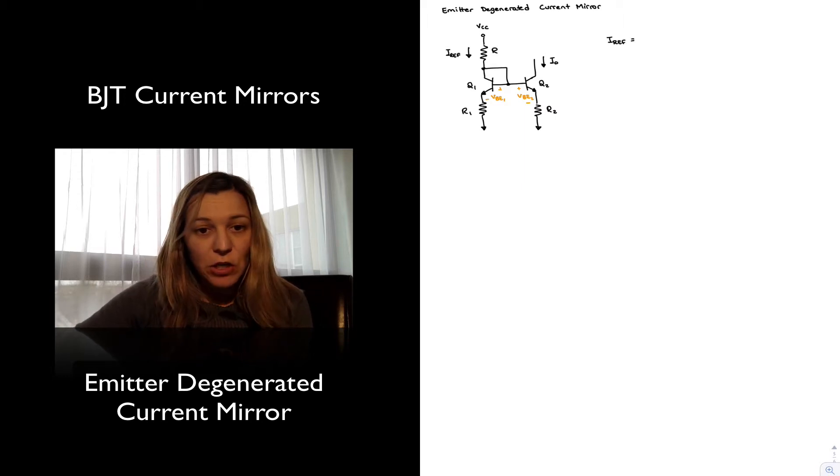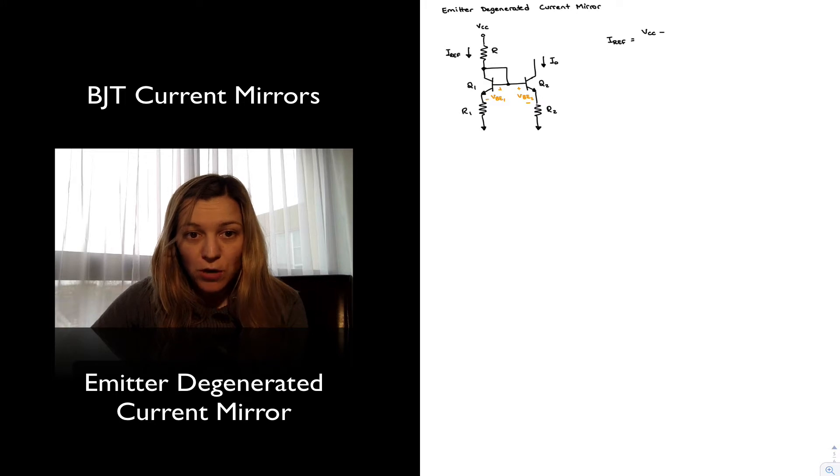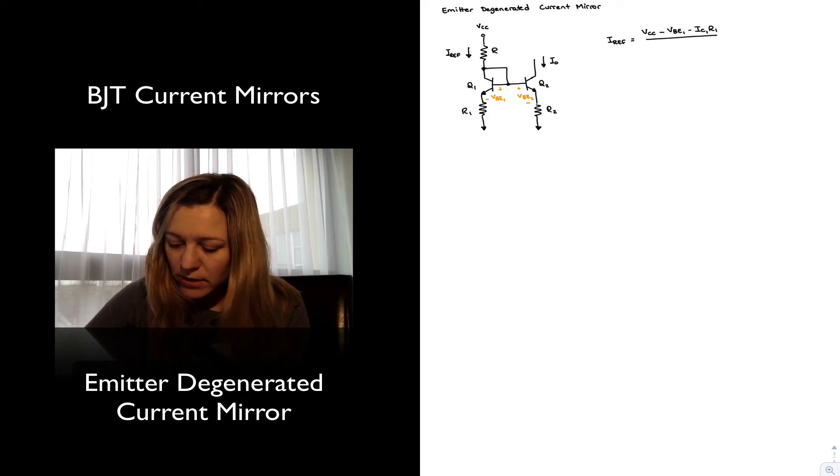And IREF will be the current through resistor R, and that's going to be the voltage across that resistor divided by the resistance. So VCC minus, and now we notice that the collector of transistor Q1 is sitting at VBE1 plus the voltage drop across R1. So this is going to be minus VBE1 minus IC1 R1, all that divided by R.